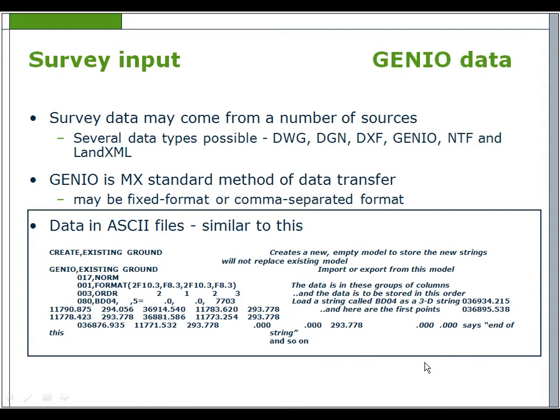Survey data may come from a number of sources including DGN, DWG, GENIO, and LAND XML. GENIO is the MX standard method of data transfer. Files are ASCII files and may be in fixed or comma-separated format.